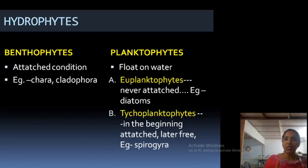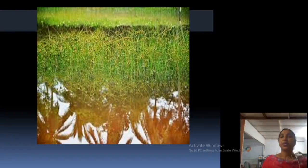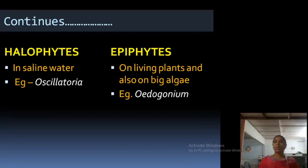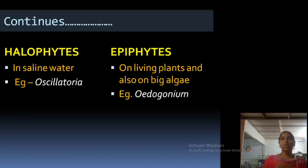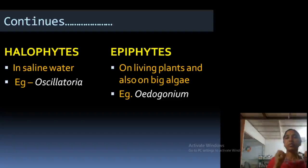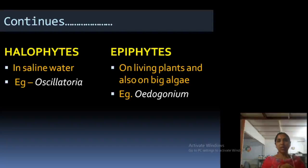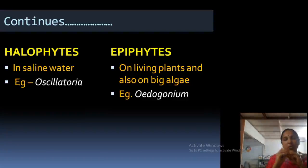Planktophytes are again classified into euplanktophytes and trichoplanktophytes. Most planktons belong to the first category — an example is diatoms. Some are first attached then become free-floating; an example is Spirogyra, a very common alga studied even in plus-two classes. You can see in the picture water with free-floating algae and also algae attached in ponds.